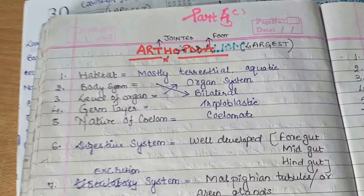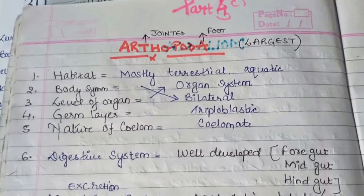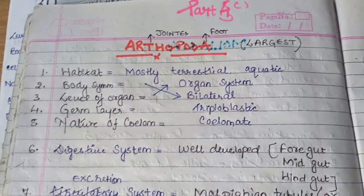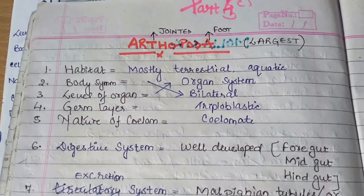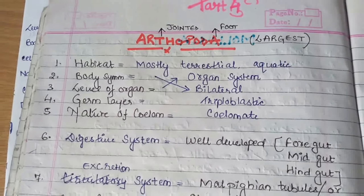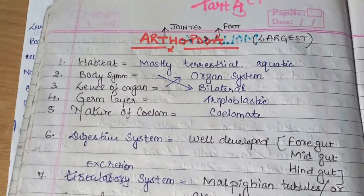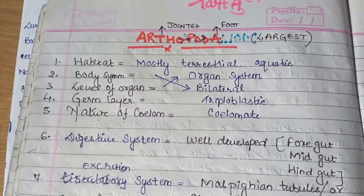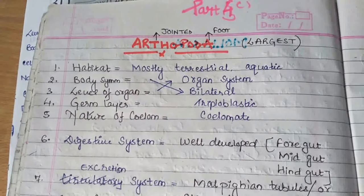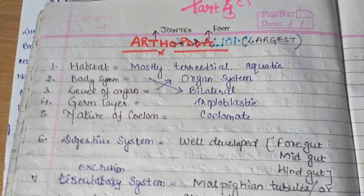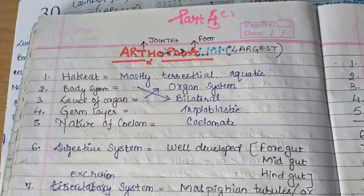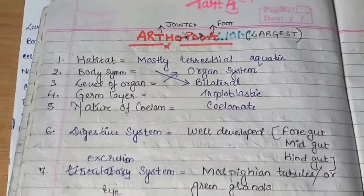Generally, 'arthro' means jointed and 'poda' means foot — meaning whatever the appendages are, they are jointed and attached. Arthropoda is the largest phylum in the animal kingdom, so many species belong to this phylum.